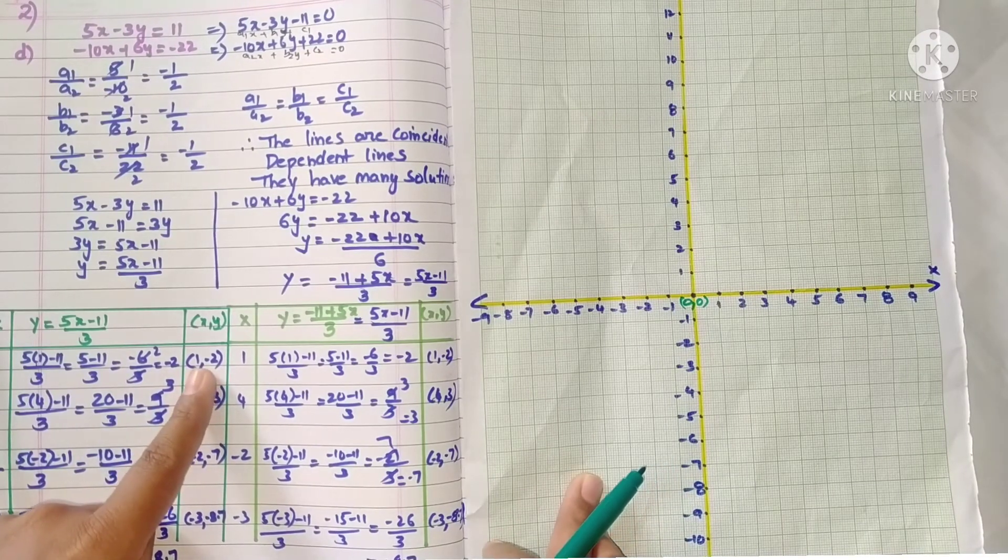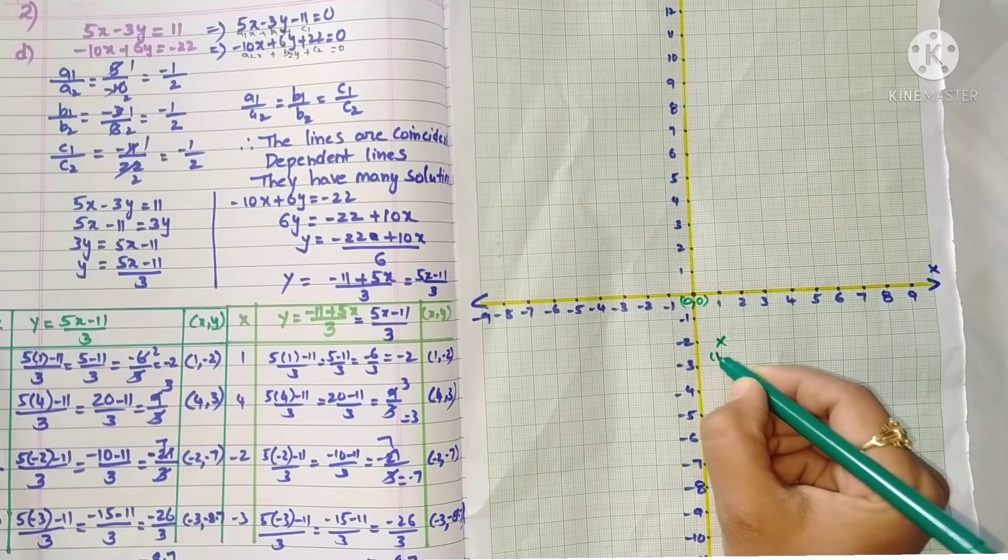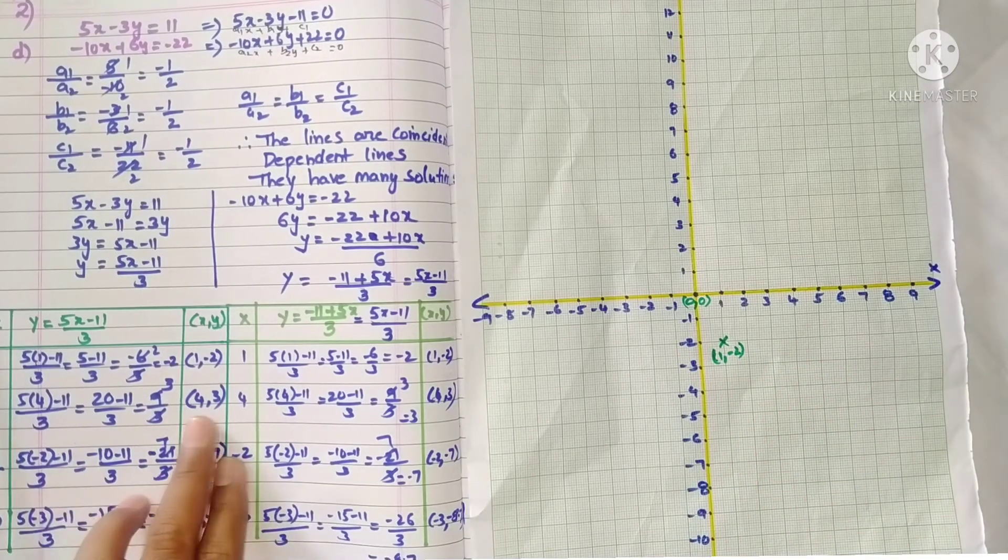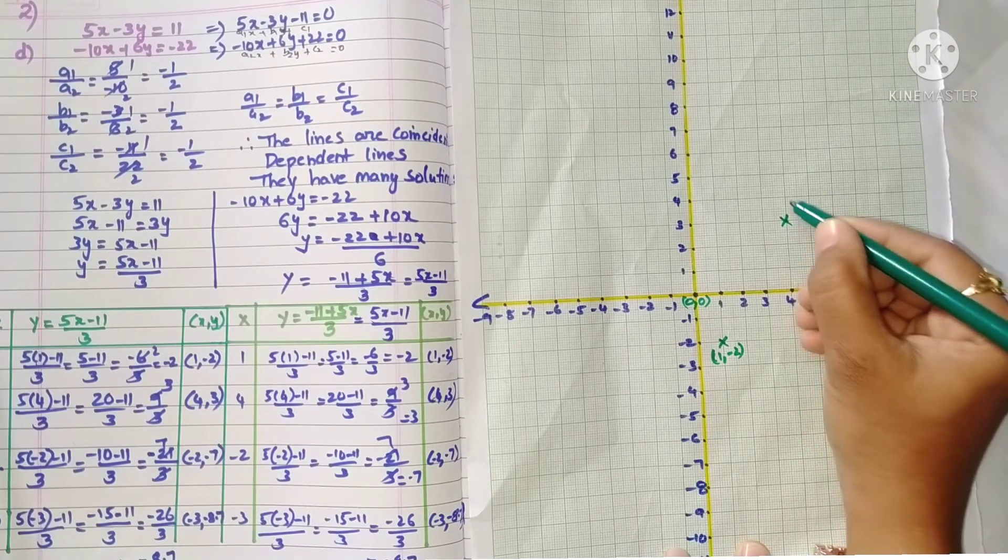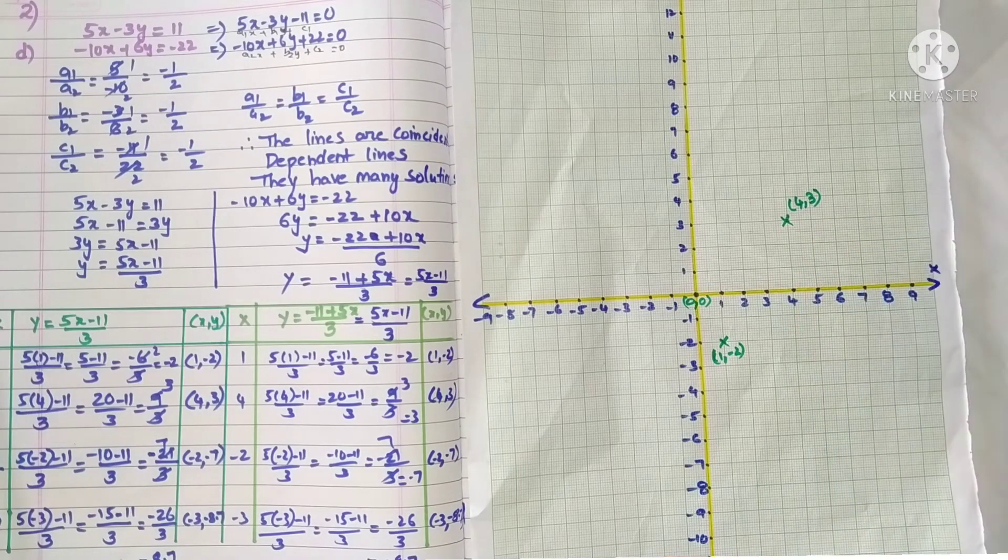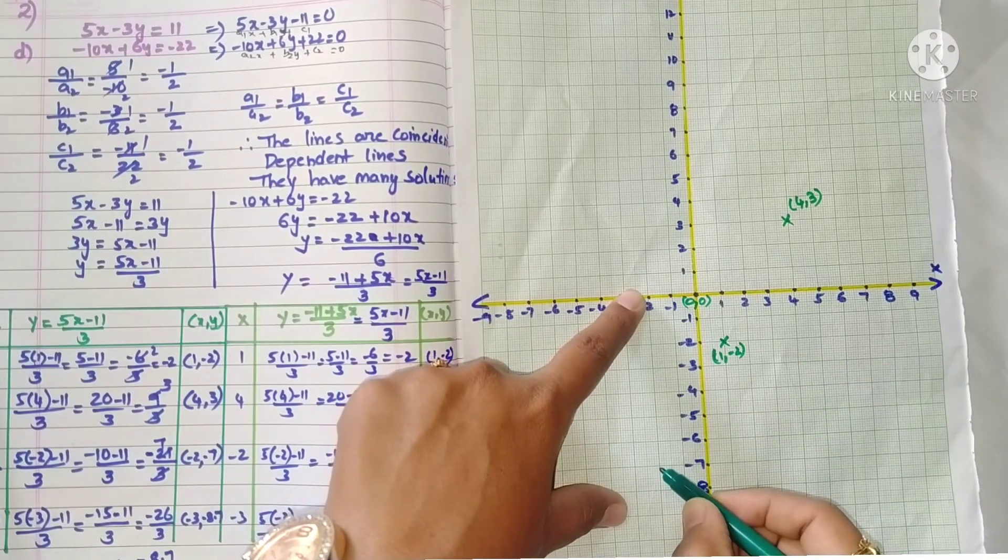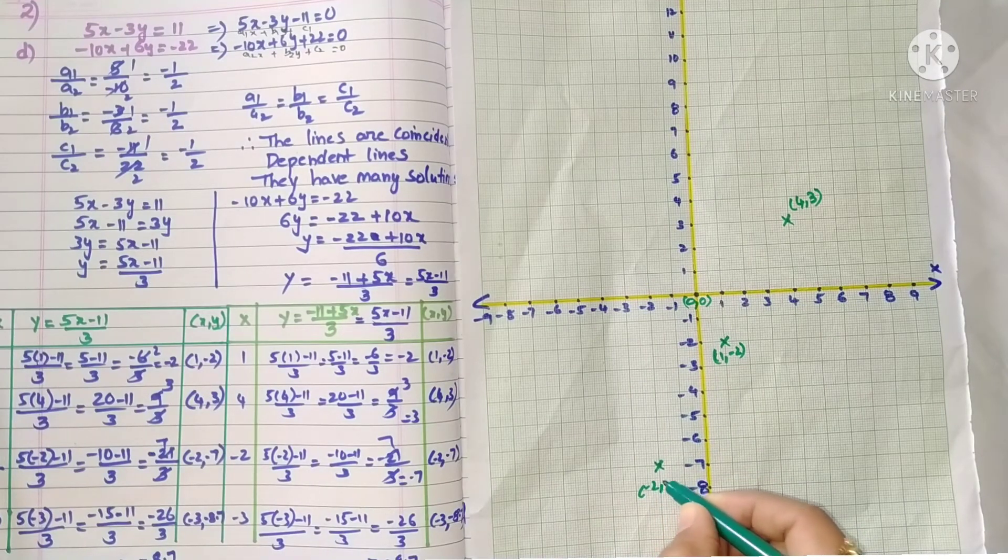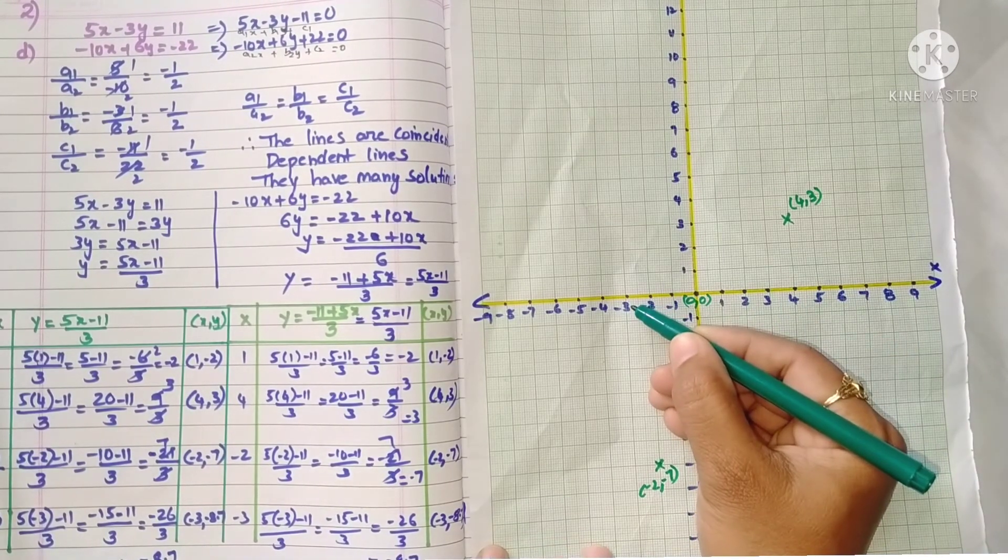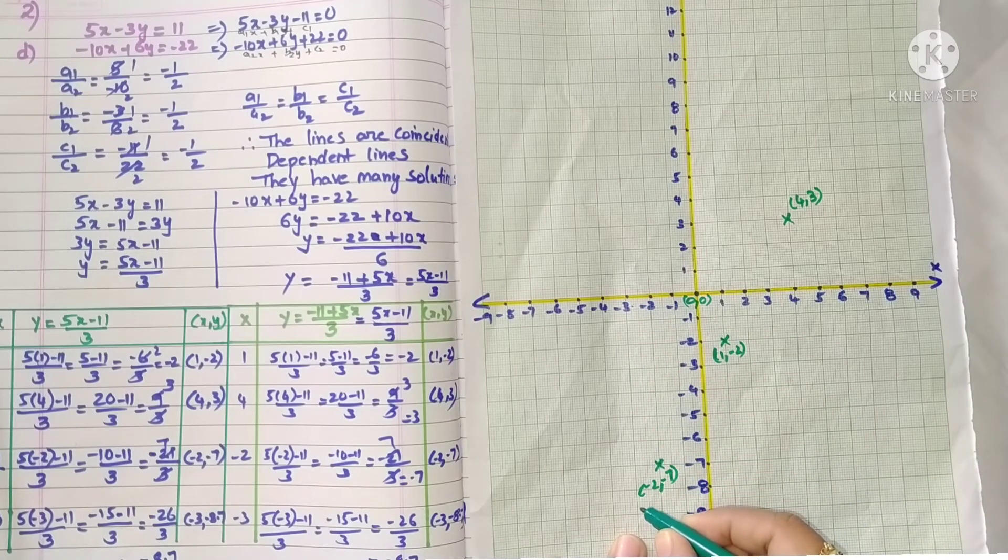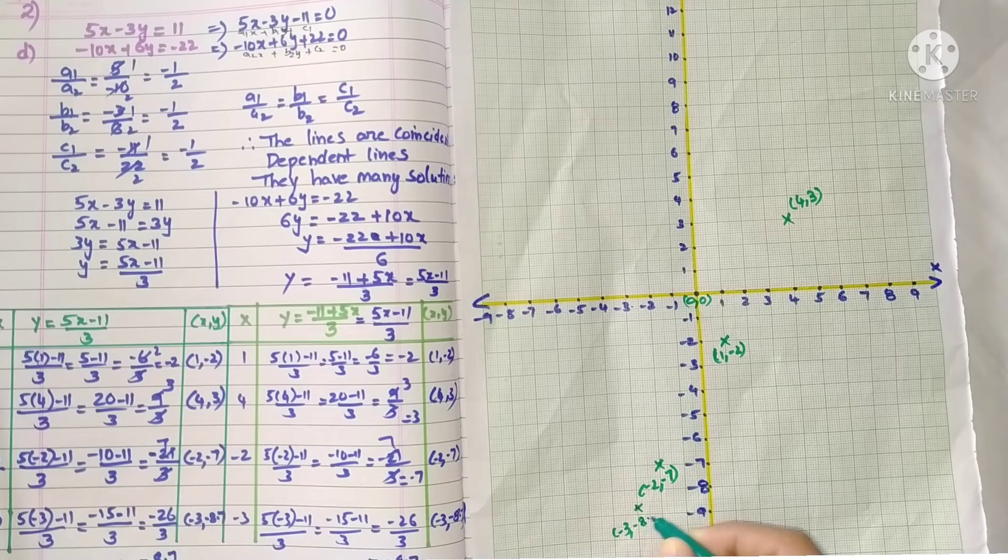The first point is x = 1, y = -2. Mark 1, -2. Now x = 4, y = 3. Mark 4, 3. Now x = -2, y = -7. Mark -2, -7. Last one: x = -3, y = -8.7. After 7, 2 lines down, so minus 3, minus 8.7. Here are the same points.